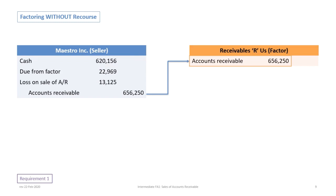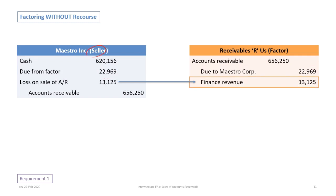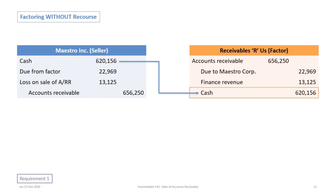On the factor side: since Maestro the seller is giving up $656,250 in receivables, that amount is picked up by the factor. Since we calculated $22,969 due from the factor, Receivables Are Us must also recognize a liability of the same amount due to Maestro. What the seller calculates as a loss on sale, the factor calculates as finance revenue — that 2% finance revenue. Finally, the cash paid by the factor is the same $620,156 received by Maestro — the receivable minus the holdback minus the finance revenue.